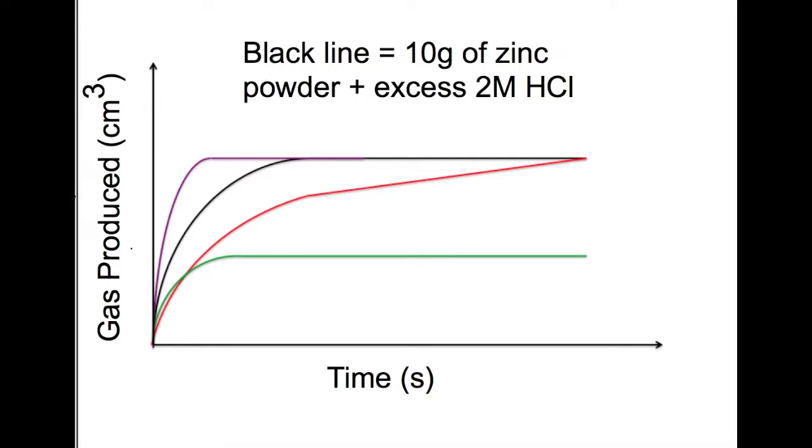So we must still have 10 grams of zinc. And this must still be in the powdered form as well because lumps would be slower rather than faster. So the two ways to make this faster would be to increase the HCl concentration or to increase the temperature. So for example this might be 3M HCl or a higher temperature.